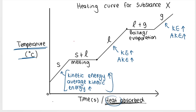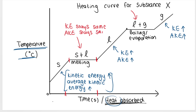So kinetic energy increasing causes temperature to increase — that happens in all the inclined parts of the graph. The heat energy being absorbed in the inclined parts is causing kinetic energy to change. However, when we reach the flat parts of the graph, we are still absorbing heat energy for that entire time period, but it is not causing the kinetic energy of the particles to increase. Kinetic energy stays the same, therefore average kinetic energy stays the same, which means temperature doesn't increase — you can see the temperature stays constant across that entire flat section.